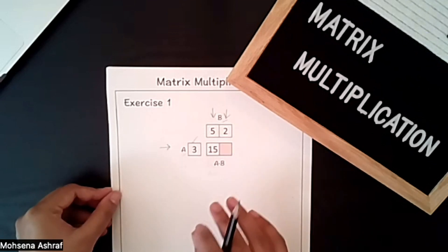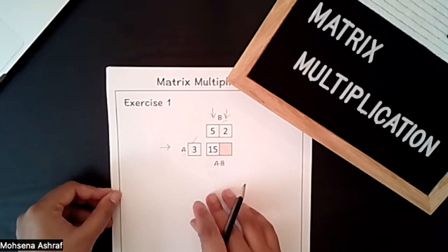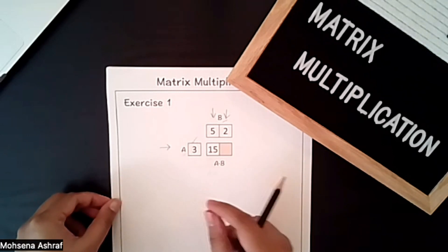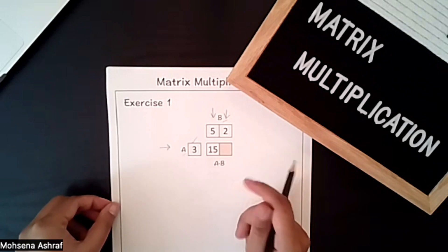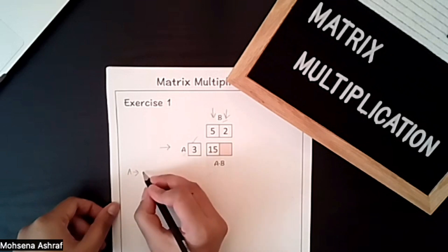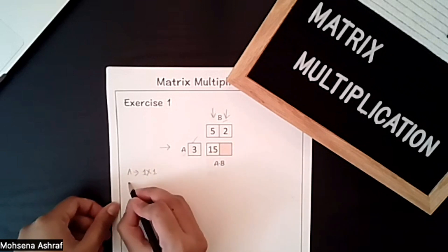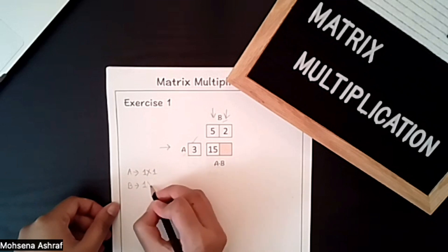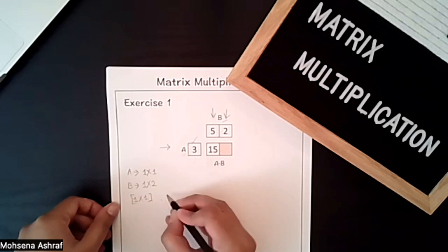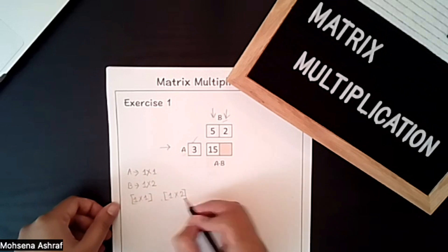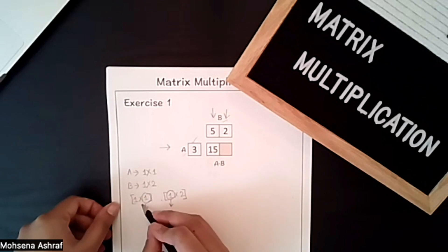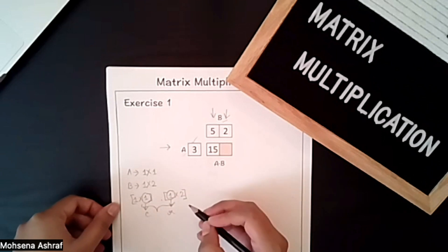For multiplying two matrices we have to keep in mind two things. The first thing is: the column of the first matrix should be equal to the row of the second matrix. For example, here the A matrix's dimension is 1×1 and the B matrix's dimension is 1×2. So the first matrix's column should be equal to the second matrix's row. If they are not equal, then we can't multiply these two matrices.